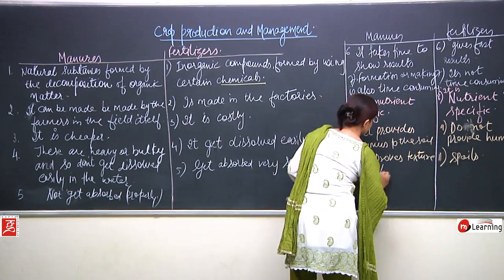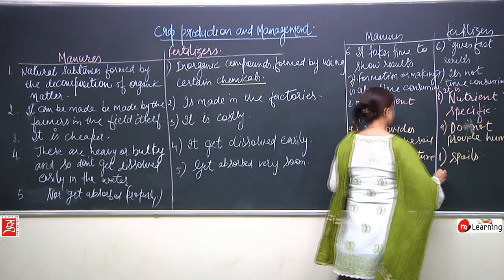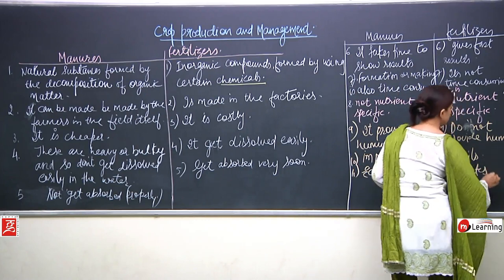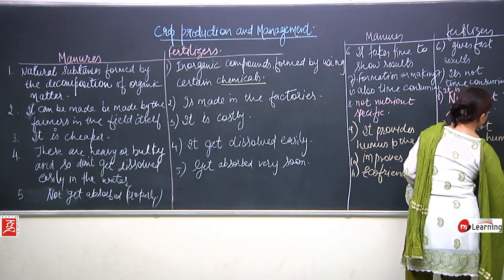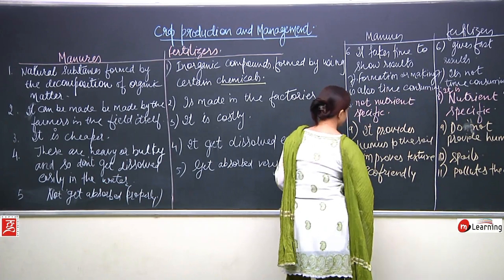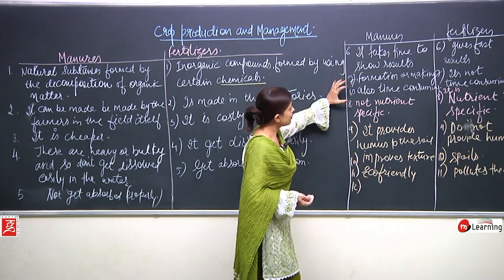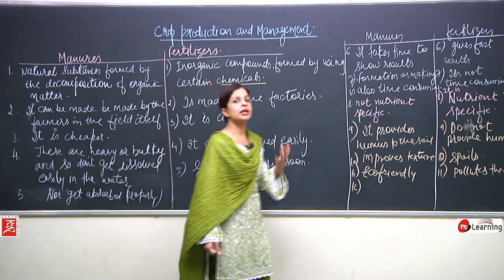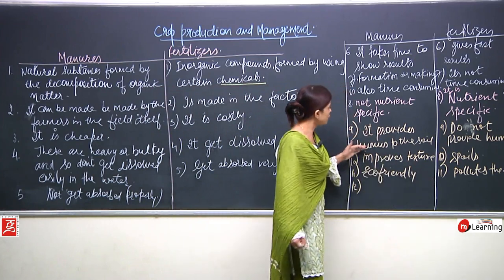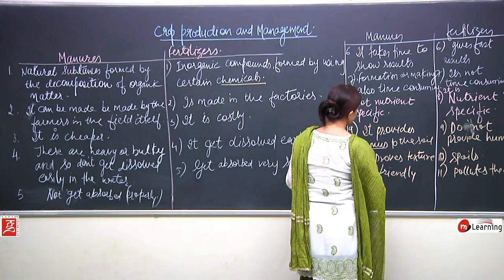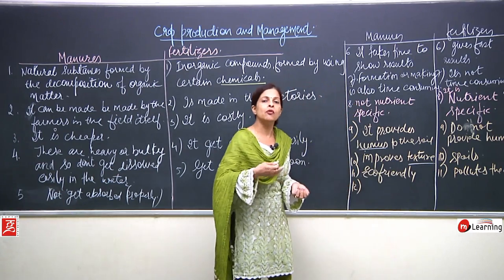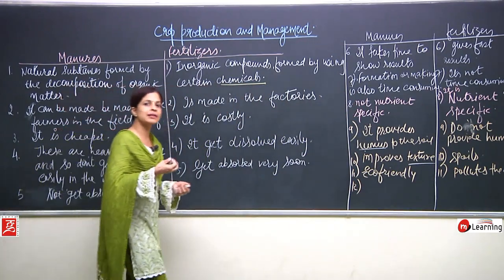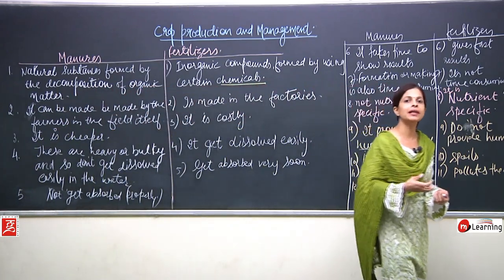Manure is eco-friendly, while fertilizers pollute the atmosphere. Manure provides humus — when dead and decomposed things reach the soil, they are full of nutrients and increase the overall fertility of the soil. With manure, the overall quality of the soil improves, farmers can get better quality crops, and even the quantity increases.